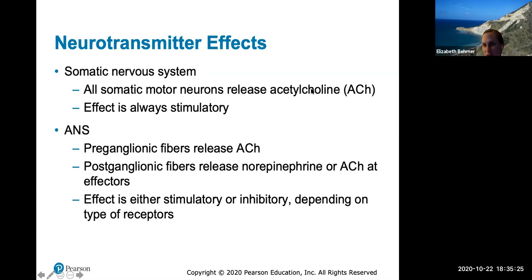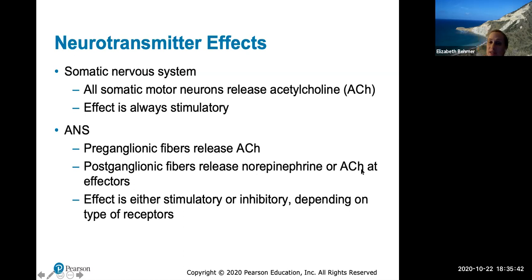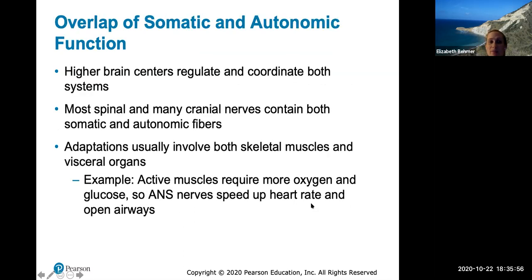The postganglionic neuron is always outside the CNS, in the spinal peripheral nerves. Its cell body synapses with the preganglionic axon in the autonomic ganglion, and a non-myelinated postganglionic axon extends to the effector organ. In the somatic nervous system, the neurotransmitter is acetylcholine, and the effect is always stimulatory. In the ANS, preganglionic fibers release acetylcholine to the ganglia, and postganglionic fibers can release norepinephrine or acetylcholine — with effects that can be stimulatory or inhibitory.